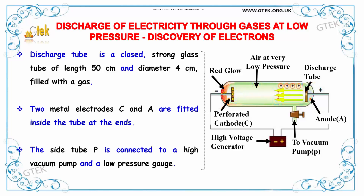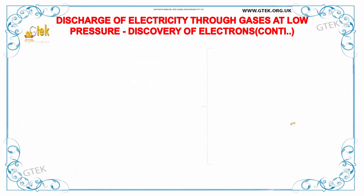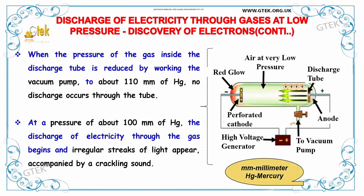The electrical charge passed creates a red glow. Two metal electrodes — a cathode and anode — are fitted inside the tube. The side tube P is connected to a high vacuum pump and a low pressure gauge. When the pressure of the gas inside the discharge tube is reduced by the vacuum pump to about 110 mmHg,